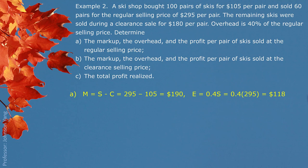Overhead or expenses information comes from 40% regular selling price. So 40% multiplied by $295 gives us $118. Then we can get profit. Profit would be markup, take out expenses. $72 is the profit.